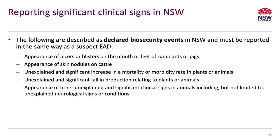Under the Biosecurity Act, there are a number of clinical signs that are declared biosecurity events, and it is a legal responsibility for those events to be reported to us. These include the appearance of ulcers or blisters on the mouth or feet of ruminants or pigs, the appearance of skin nodules on cattle for lumpy skin disease concerns, an unexplained or significant increase in mortality or morbidity rate in plants or animals, and unexplained significant fall in production. For example, if you're pregnancy testing and there are low reproductive rates you can't explain, that would be a declared biosecurity event.